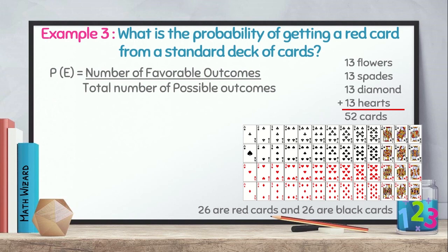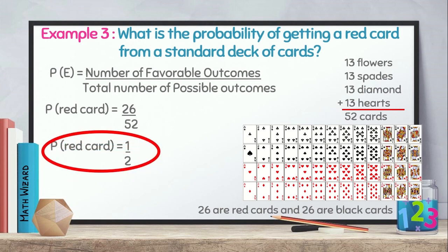Going back to the problem, we have our formula. We need to identify the probability of getting a red card. We need to identify how many red cards are there in a standard deck of cards. We have 26 red cards, and the total number of possible outcome is 52. Reducing to lowest term, the probability of getting a red card is 1/2, 0.5, or 50%.